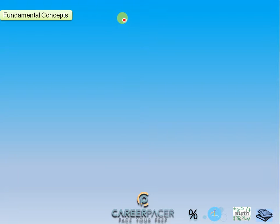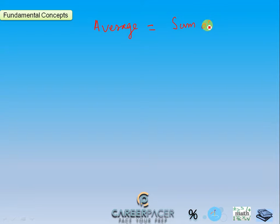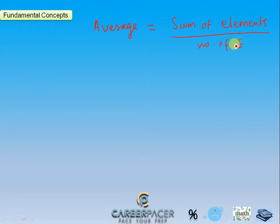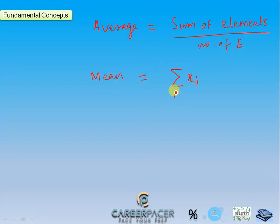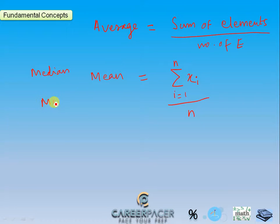The first fundamental concept is the average formula. Average is equal to the sum of elements divided by the number of elements. We call this the mean also. In formal notation, we write it as sigma x_i from i=1 to n, divided by n. In statistics, we have mean, median and mode.